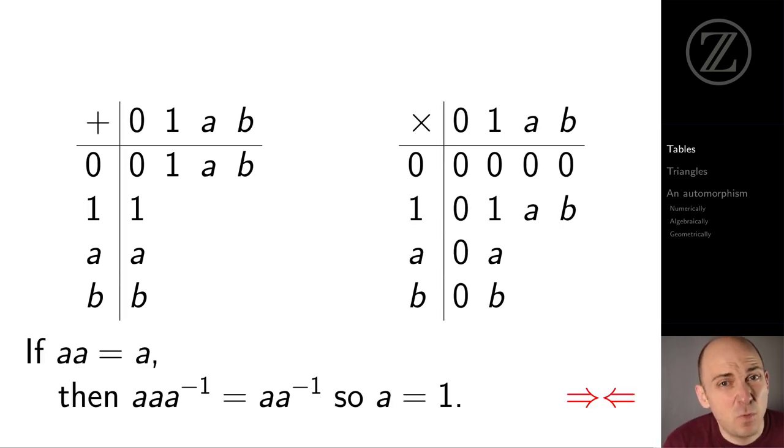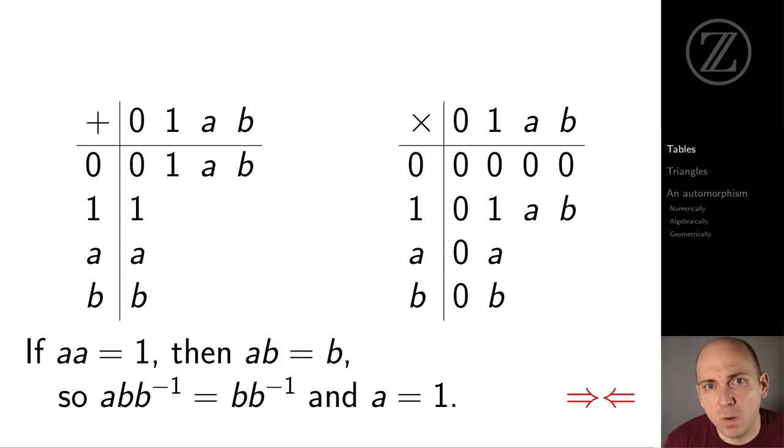So what's A times A? If it were A, then post-multiplying both sides by the multiplicative inverse of A would give us that A is 1. But A isn't 1. If A times A were 1, then A times B would be B. But that's no good.